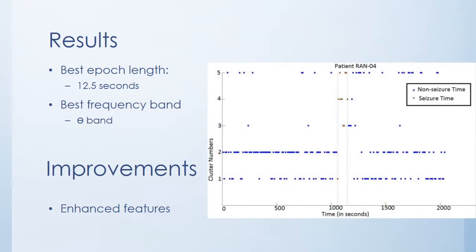My results are the following. The best epoch length for each frame is 12 and a half seconds — this is the optimal time to divide the signal into frames. The best frequency band used in these EEG data is the theta band. Among the five traditional frequency bands in EEG studies, theta band gives the best result with the most consistently high F-score values. In the picture, you can see an example output of a clustering. Red points are seizure times and blue points are non-seizure times. I get seizure times almost clustered in the same cluster for this patient's specific recording.